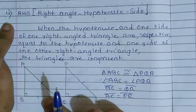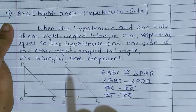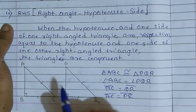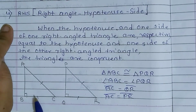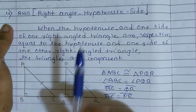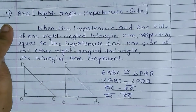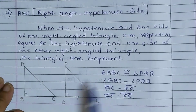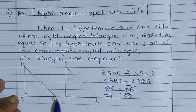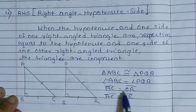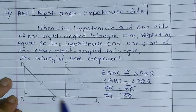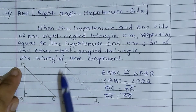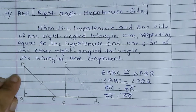इस theorem के अनुसार, यह दो triangle तब congruent होंगे जब angle same होने चाहिए, side equal होनी चाहिए, और hypotenuse भी equal होने चाहिए। Triangle ABC congruent to triangle PQR when angle ABC equals angle PQR, BC equals QR, and AC equals PR.